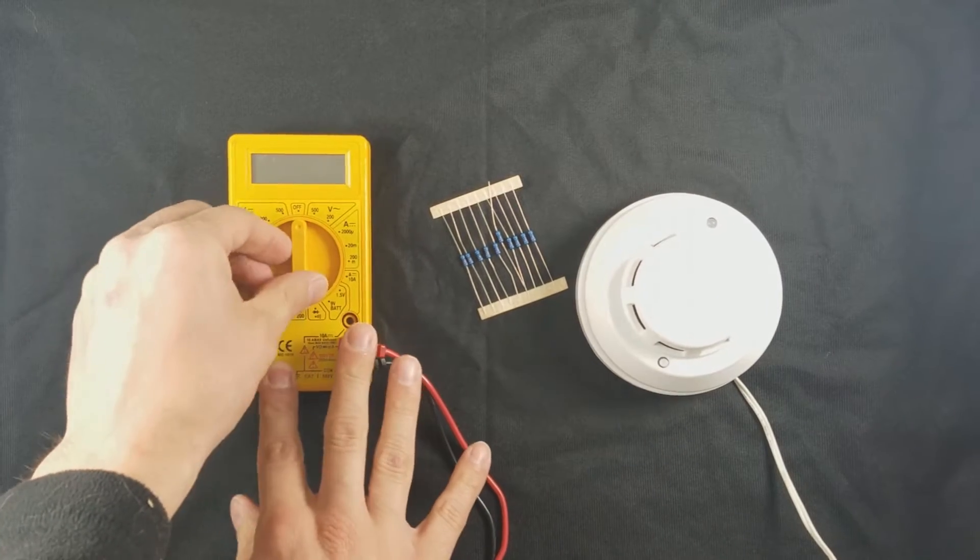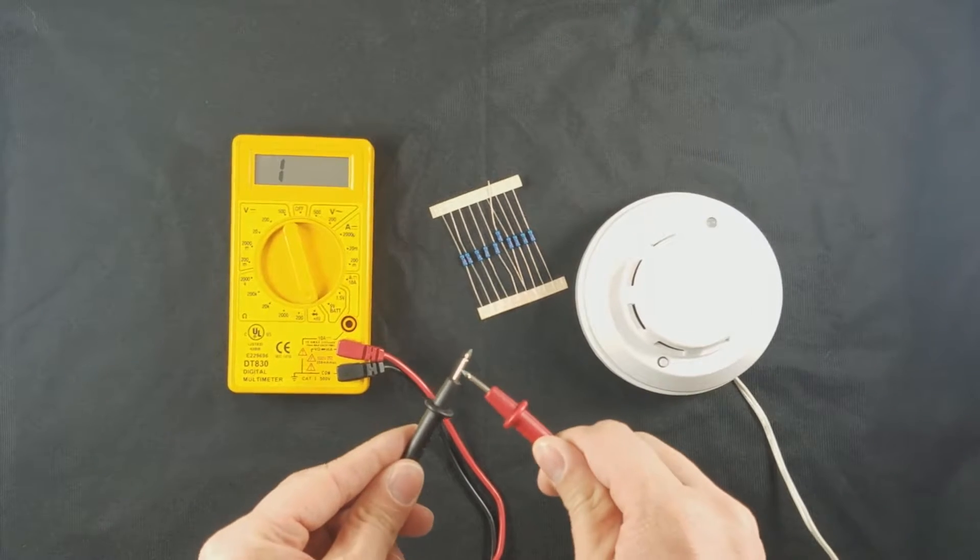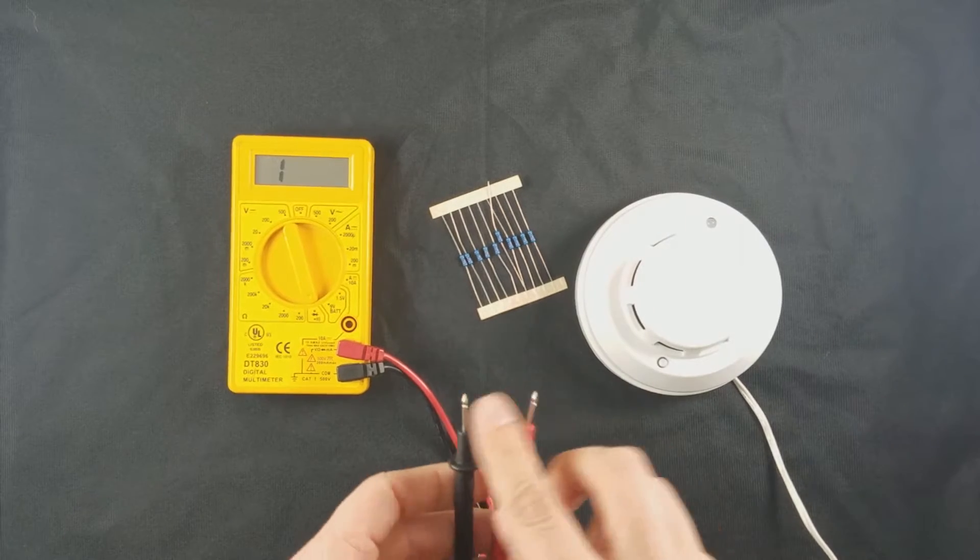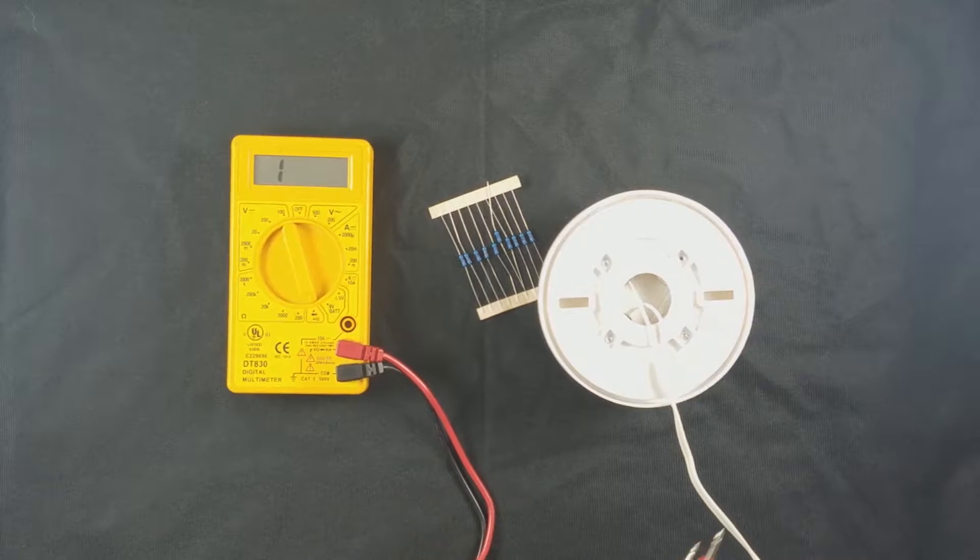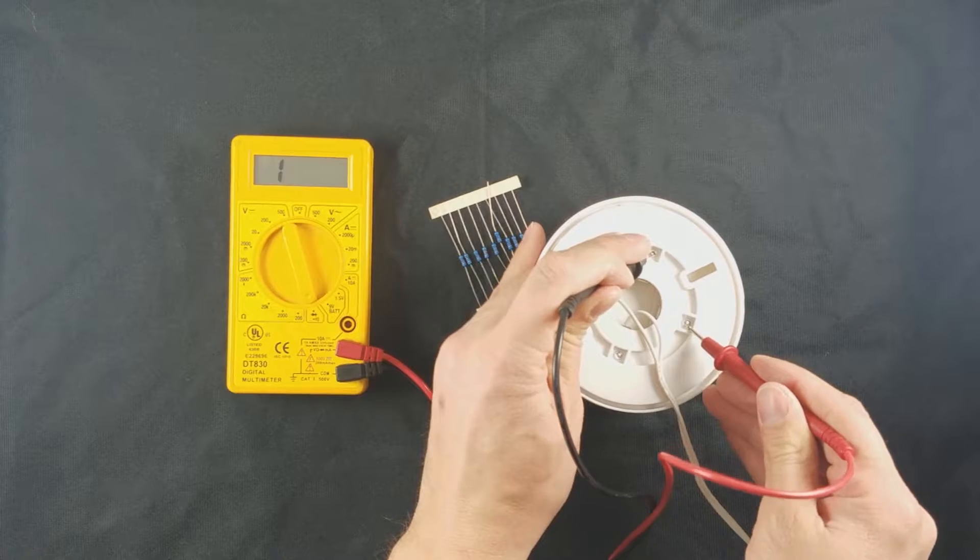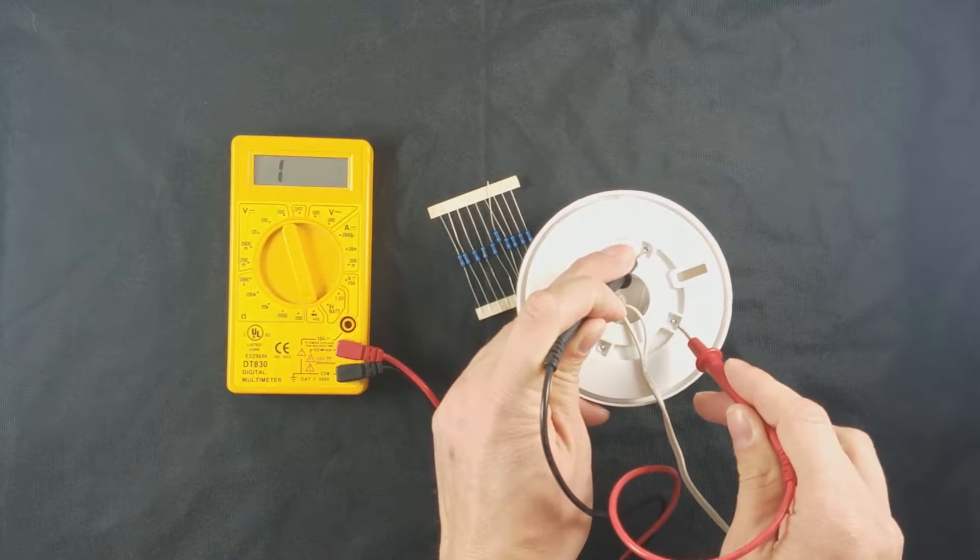With this multimeter, I'm going to turn it to the continuity setting, so it will beep when the two terminals touch. I'm going to flip the smoke detector over—these are the two relay terminals. When you touch them, you can hear it's currently set to normally closed because it's beeping.